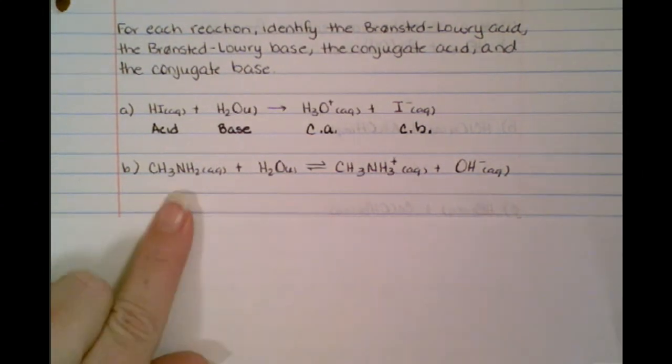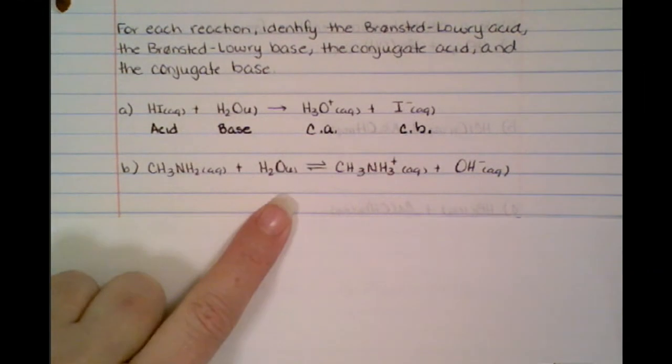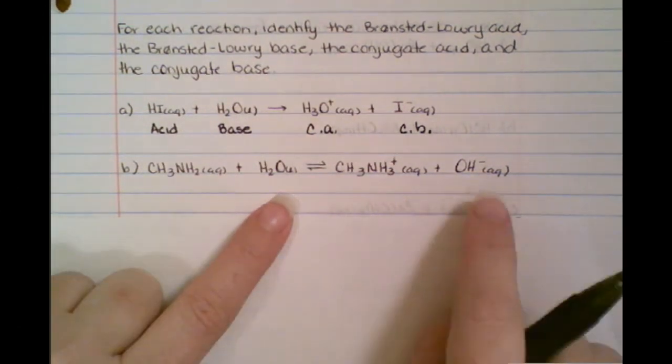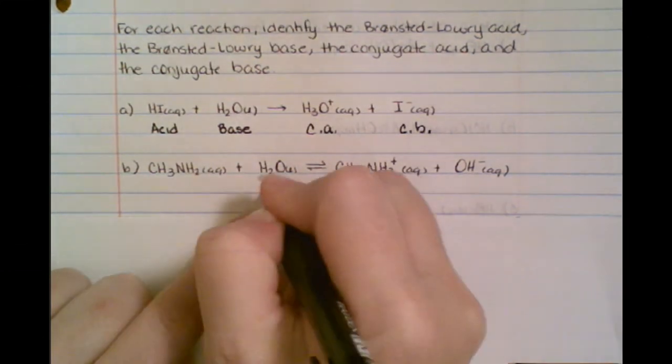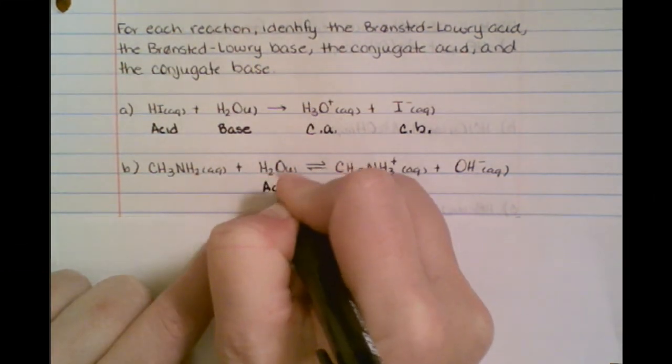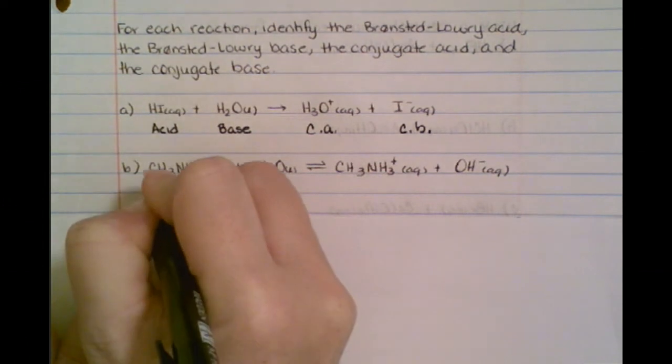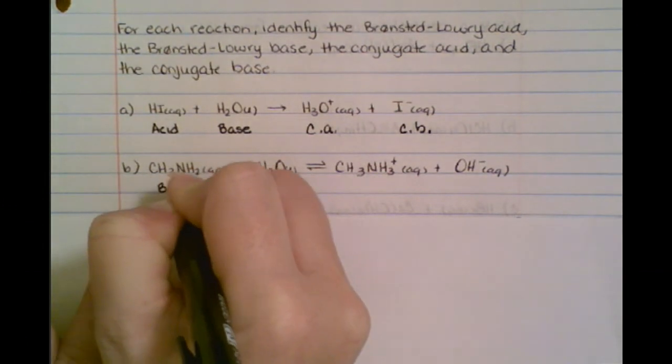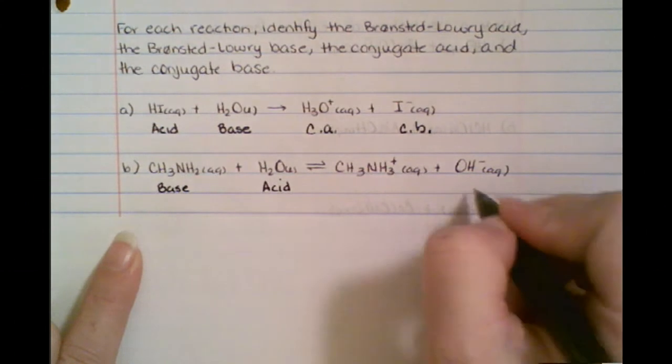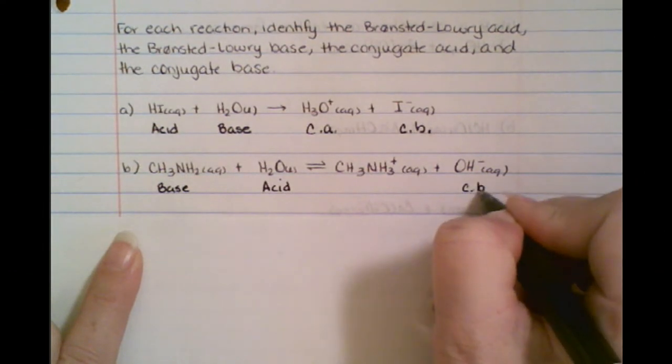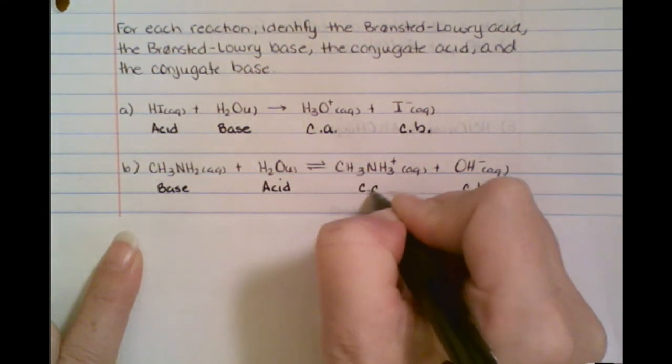So when I look at this one right here, I notice that the H2O and the OH go together, because they look about the same, and I notice that the OH is missing the H. So we know again this one's going to be an acid, because it's donating a proton, and we know that this one is going to be the base. So, we said the acid tags up with the OH, so that means this is the conjugate base, and this is the conjugate acid.